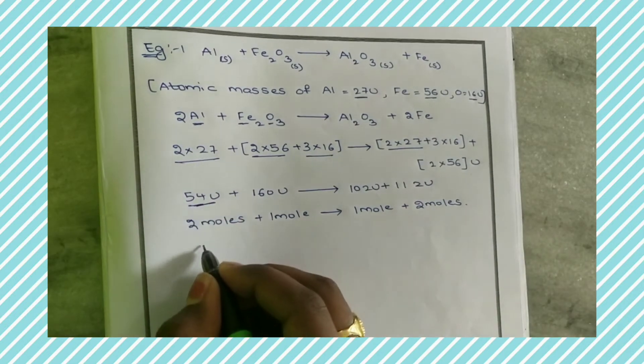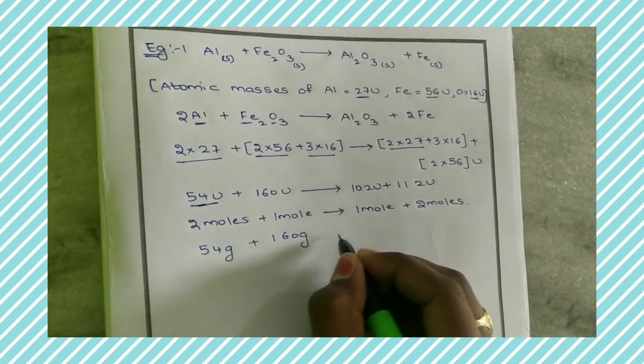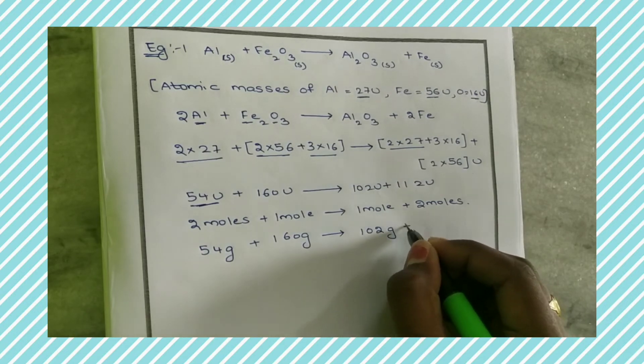We can also write it as grams, so 54 grams plus 160 grams gives rise to 102 grams plus 112 grams.